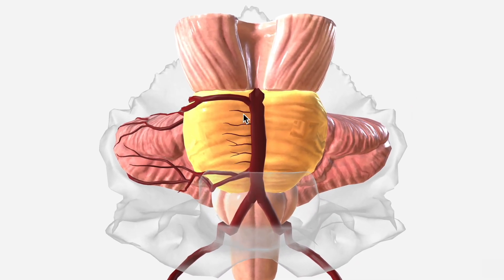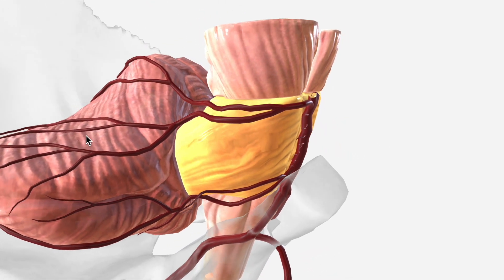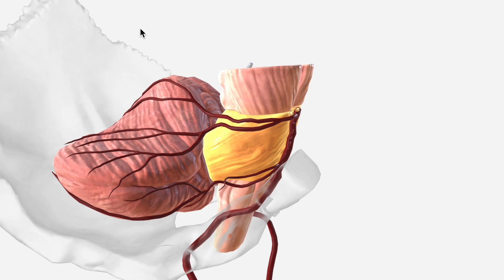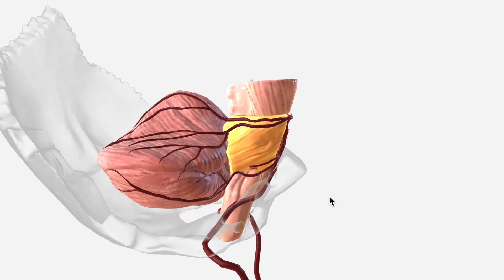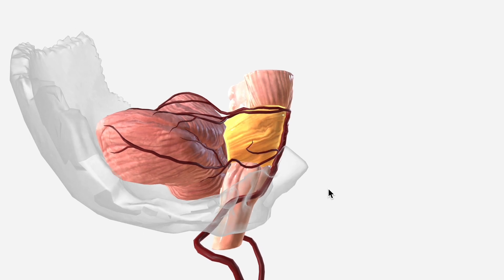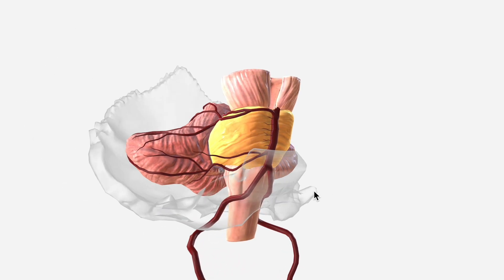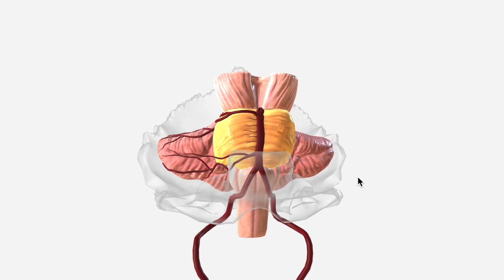Let's see how our branches fit in now. We have the pontine arteries directly supplying the pons. The superior cerebellar artery curves around the superior aspect of the pons to supply the superior cerebellum. We then have the AICA doing the same for the inferolateral cerebellum, and the labyrinthine artery typically departing from the AICA to traverse the internal acoustic meatus towards the inner ear.